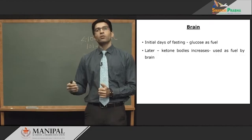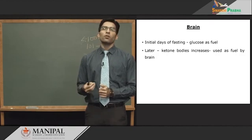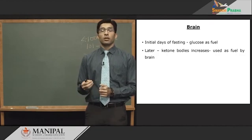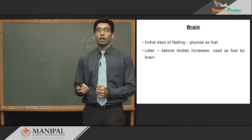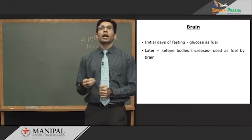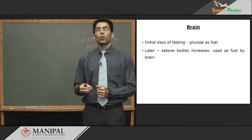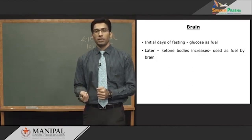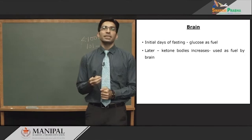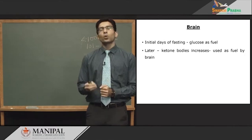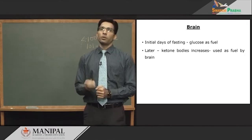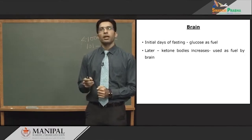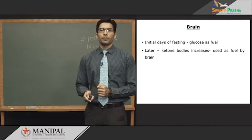This ketone body utilization by the brain applies only in starvation when the person is not eating well. In diabetes, this is not applicable because the person is eating well but insulin cannot utilize the glucose available in plasma. Ketone bodies utilization by the brain in the initial phase of diabetes does not exist; it occurs only when there is significant diabetic ketoacidosis.